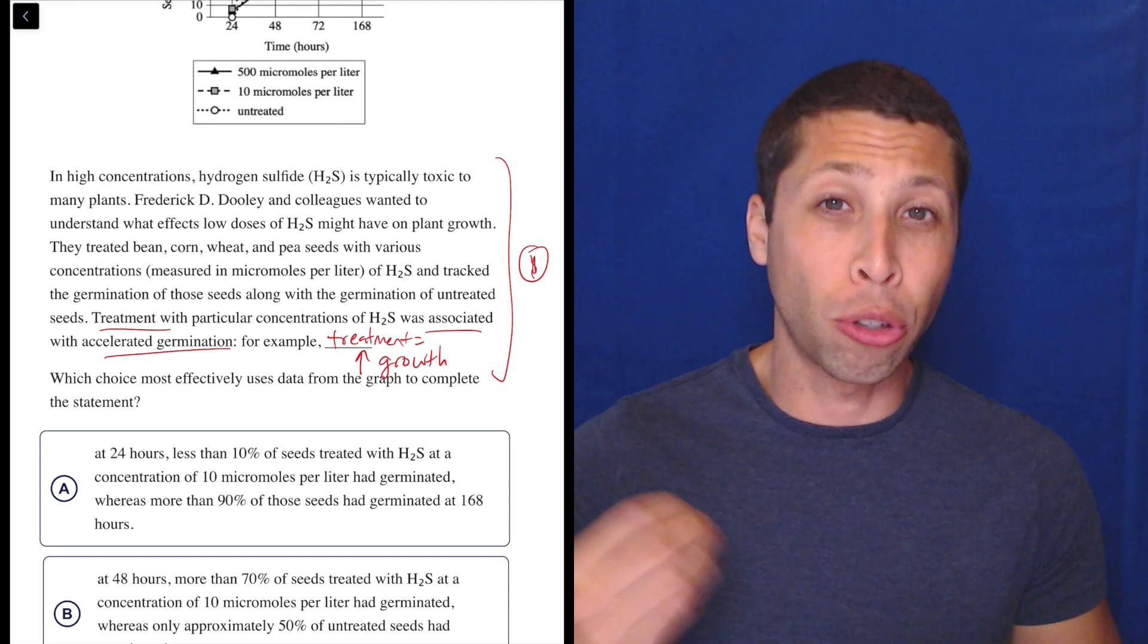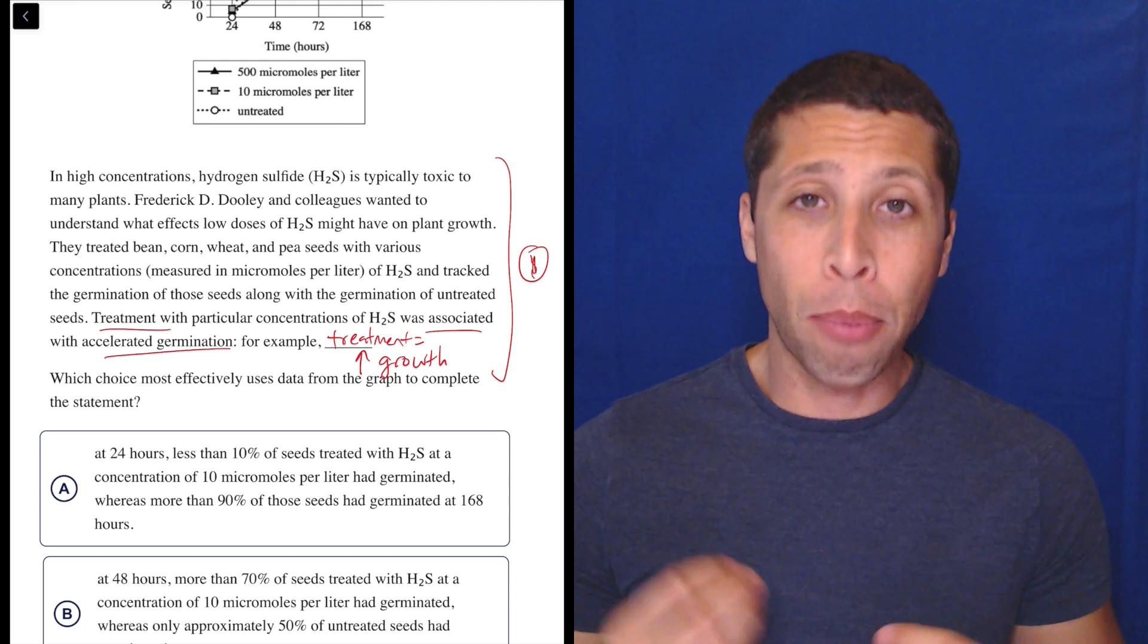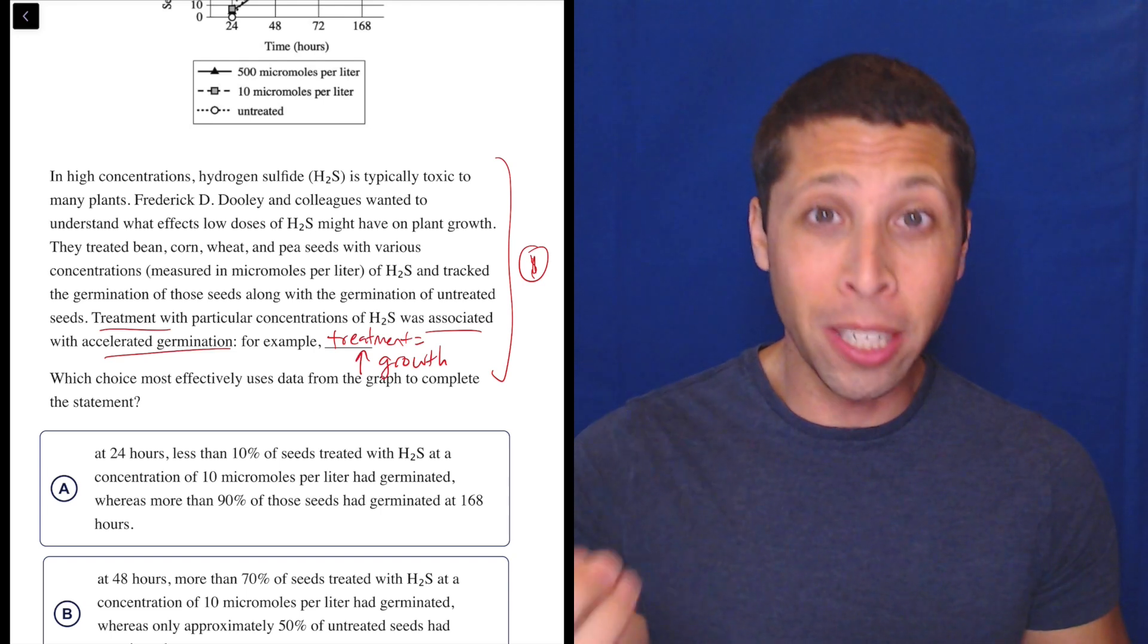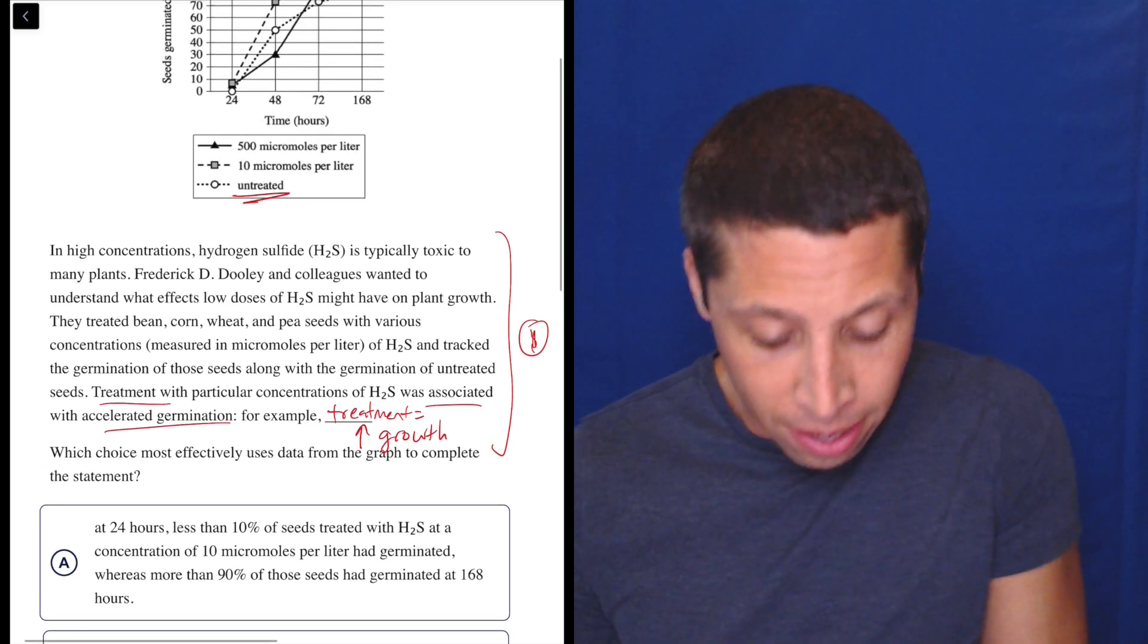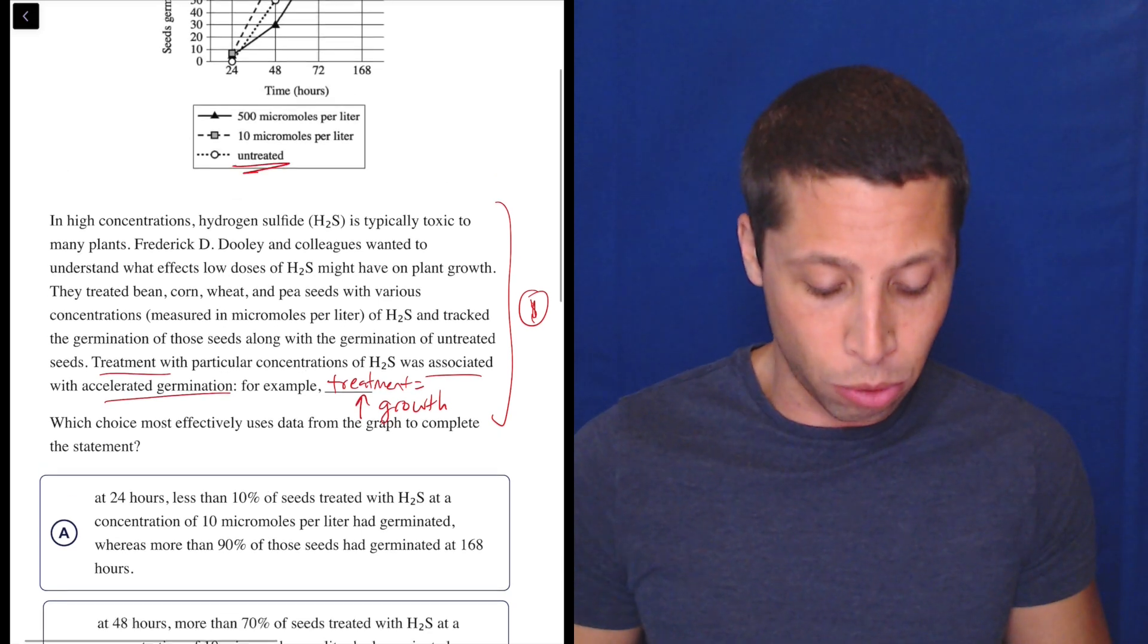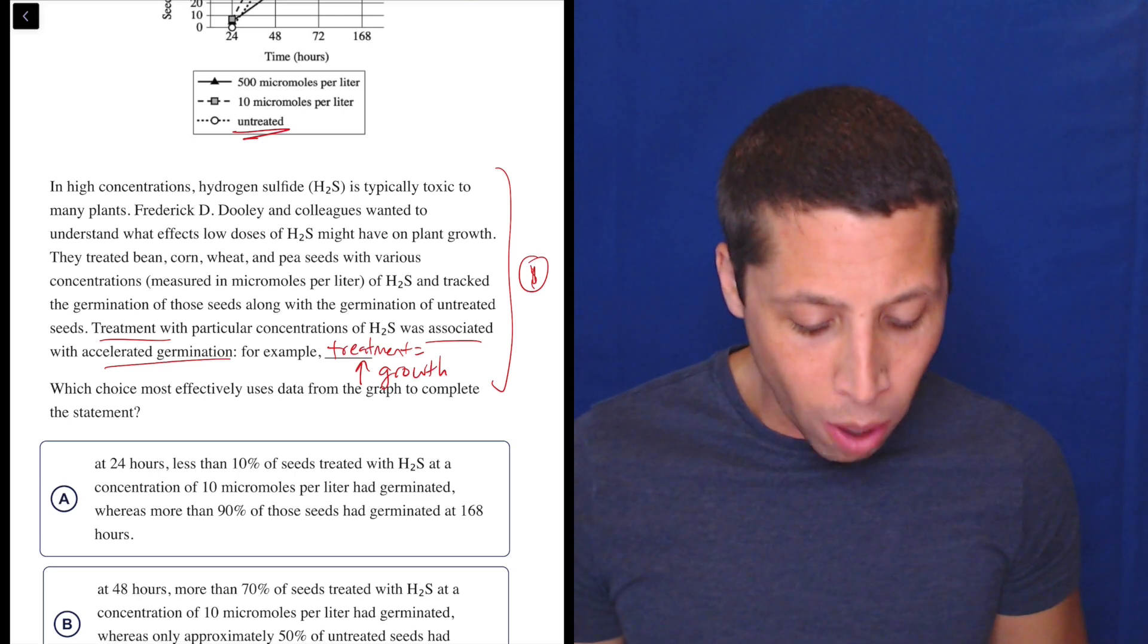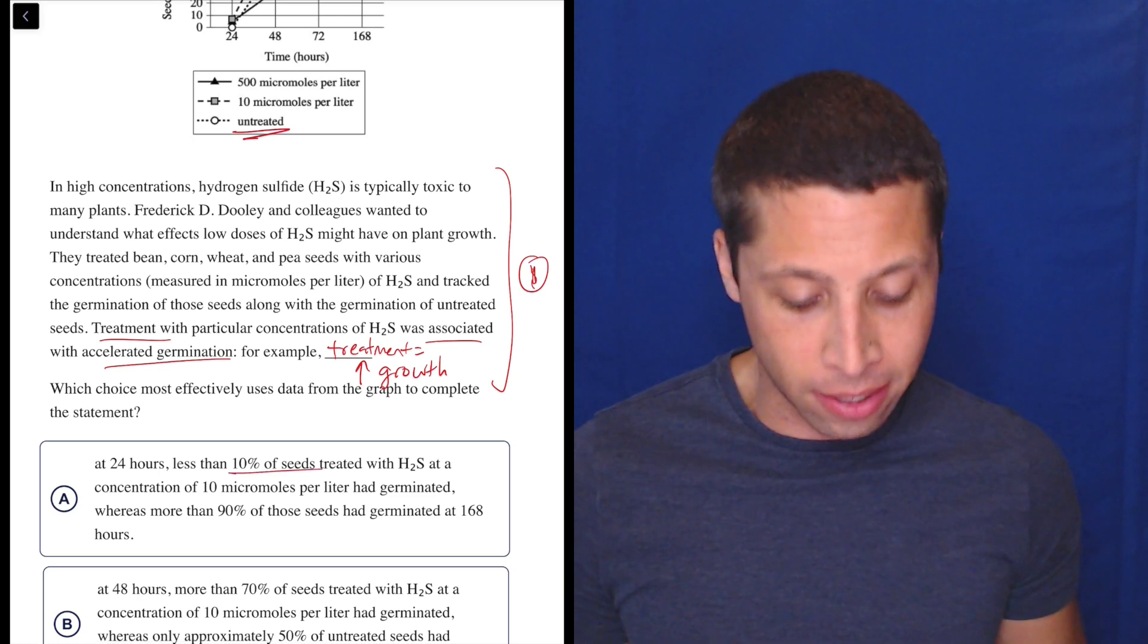If we're trying to talk about how treatment accelerates growth, I probably want to compare some treated seeds to non-treated seeds, right? And I can tell that the untreated seeds are part of this too. So this is just talking about one type of seed, right? The 10% seeds.